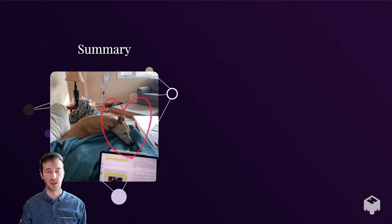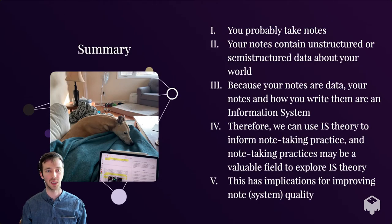I want to begin by summarizing all the key takeaways. First, you probably take notes. These notes probably contain unstructured or semi-structured data about your world. Because they're data, your notes and how you write them form an information system. Therefore, we can use theory from information systems to inform note-taking practice, and we might be able to learn from note-taking to inform IS theory. This has implications for improving note system quality.